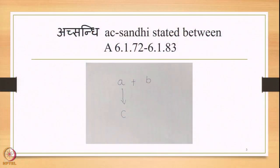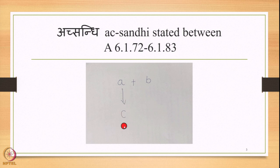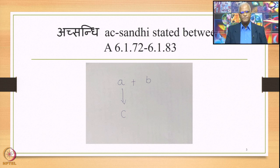Now we continue studying the other examples. Ekasthanika Ekadesha is diagrammatically represented as: A plus B in Samhita mode, with B coming immediately after A, so A gets substituted by C. A plus B is the input, C plus B is the output, B remains unchanged. This type of Sandhi and its two instances are stated in section 6172 onwards up to 6183. From 6184 onwards, the Dvishthanika Ekadesha is stated by the Sutra Ekapurvaparaya.